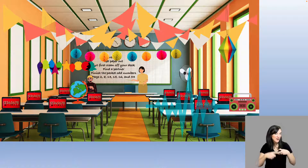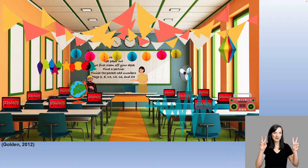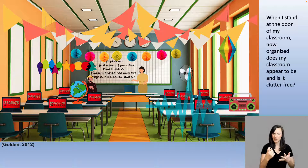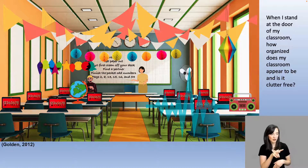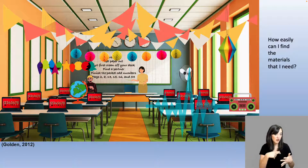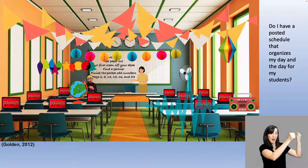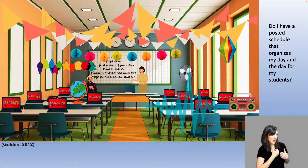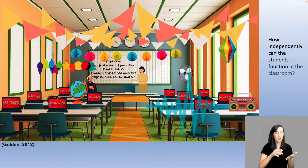Can you point out anything that may be difficult for a student who is DHH? The Special Educators Toolkit encourages us to ask these questions when it comes to the learning environment: When I stand at the door of my classroom, how organized does my classroom appear to be, and is it clutter-free? How well do I use the available space that I have? How easily can I find the materials that I need? Do I have a posted schedule that organizes my day and the day for my students? How independently can the students function in the classroom?